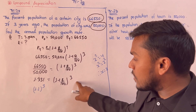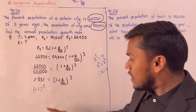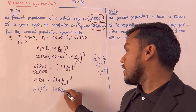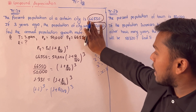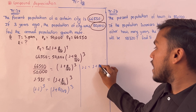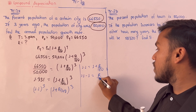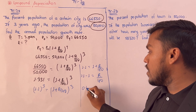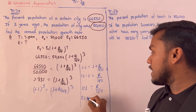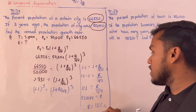Taking the cube root of 1.331 gives 1.1. So 1.1 to the power 3 equals 1.331. Simple logic: 1.1 equals 1 plus r upon 100, therefore 1.1 minus 1 gives 0.1. So r upon 100 equals 0.1.